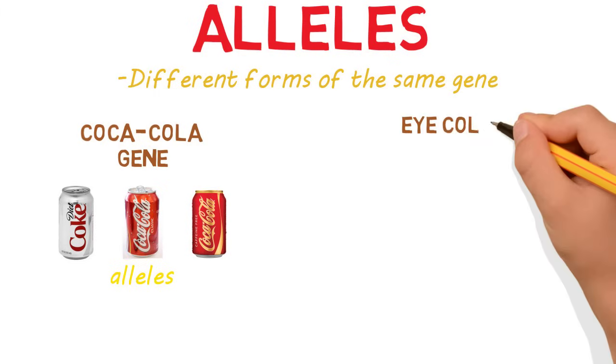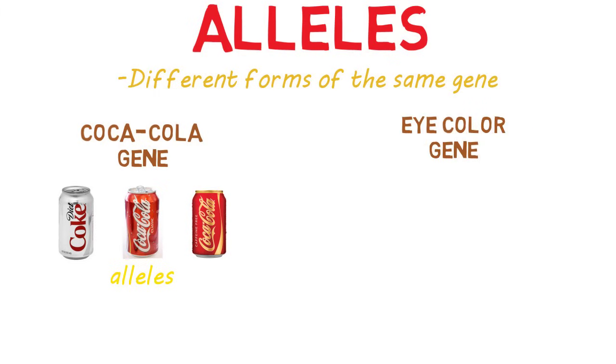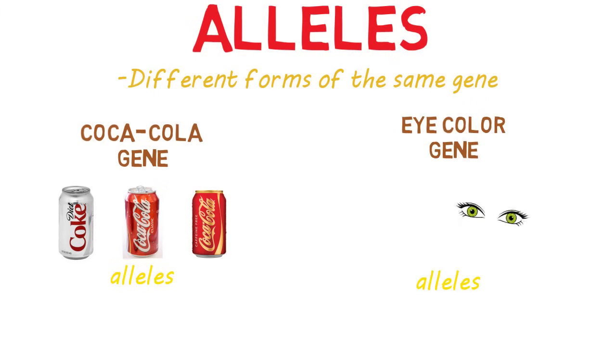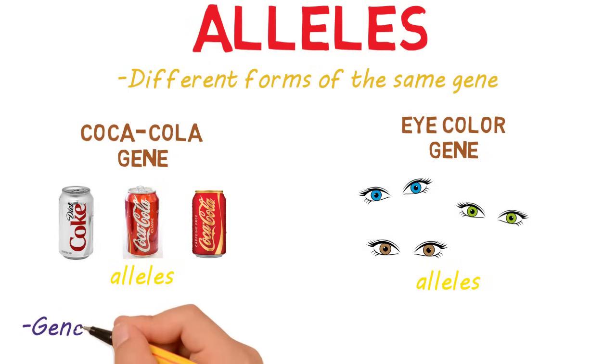Using the eye color gene, the alleles would be green, brown, gray, blue, hazel — just the different options for eye color.